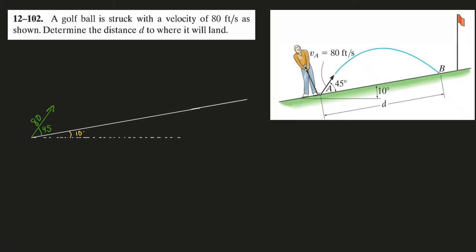Here we have the motion of a projectile that actually lands on this tilted ground. We want to know this total distance up this incline, d, that we travel.